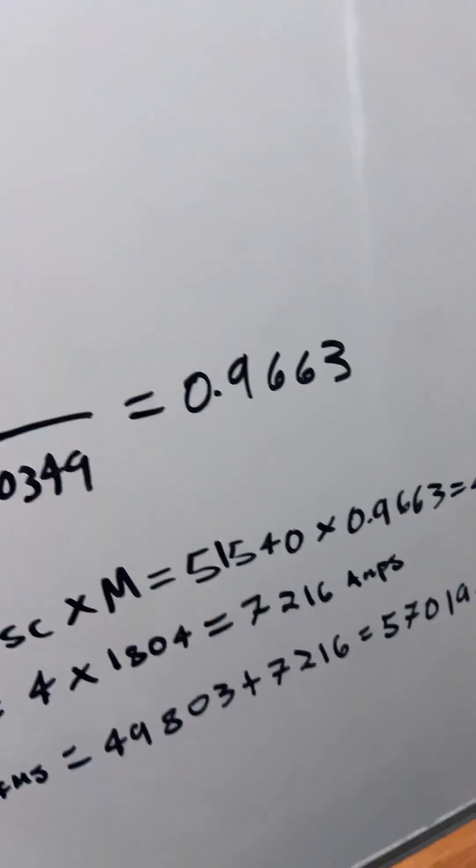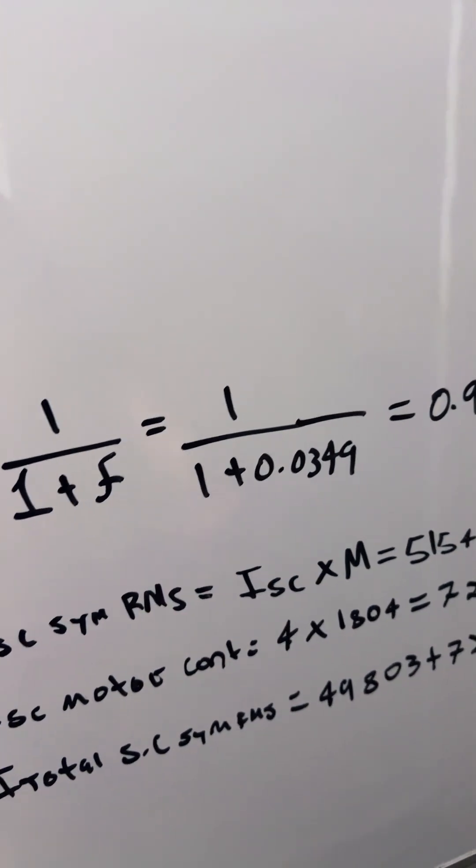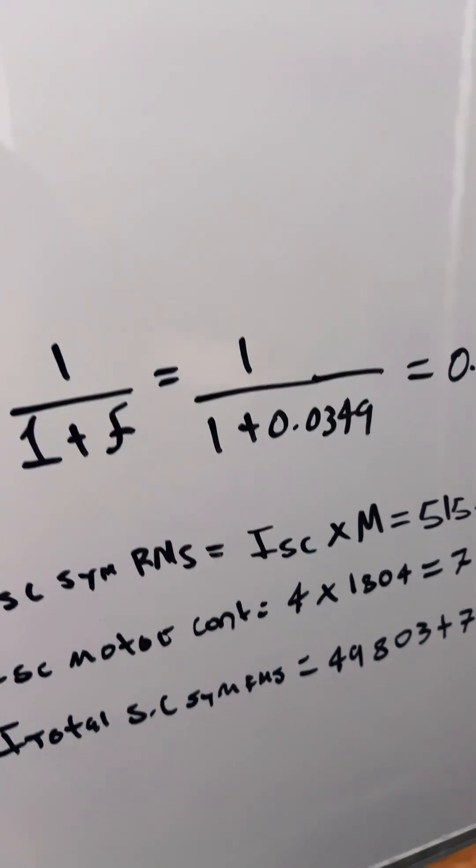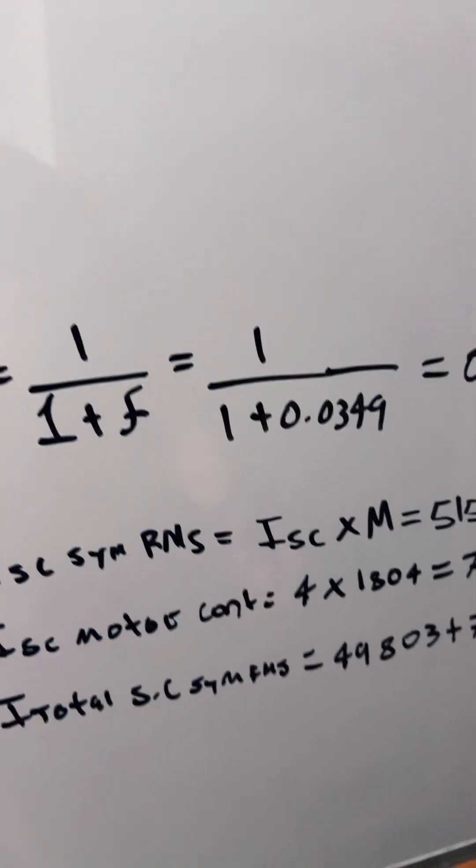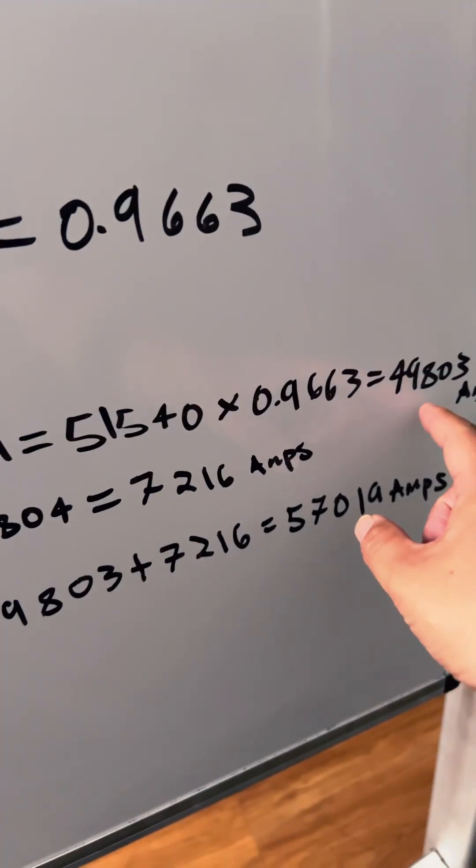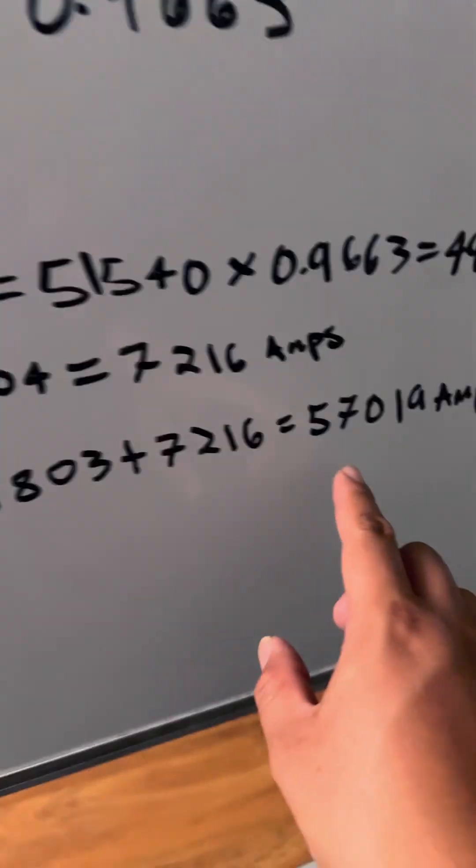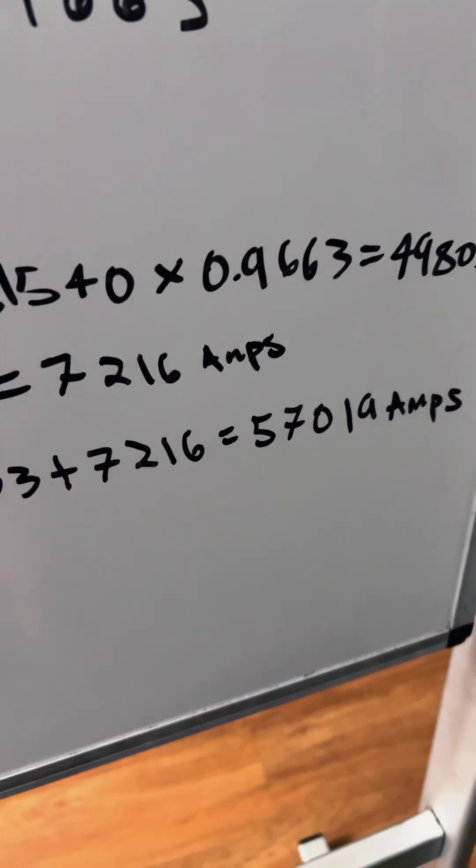Finally, we calculate the available short circuit symmetrical RMS current at the point of fault. Using the short circuit current times M gives us 49,803 amps total. Thank you.